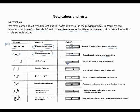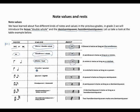A semi-brief is twice as long as a minim. The minim is half of a semi-brief. Its rest is similar to that of the semi-brief except that it faces upwards. A minim is twice as long as a crotchet.